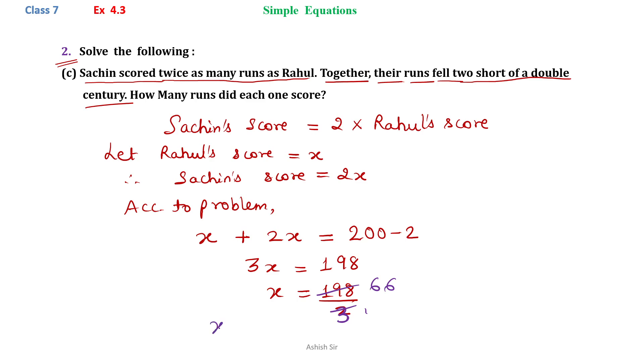So x is equals to 66. Now we have to find the score of both of them, so we will write down the answer. Rahul's score is equals to 66, whereas Sachin's score that we have to tell is 2 times the Rahul's score, so 2 into 66, so that is 132 runs.